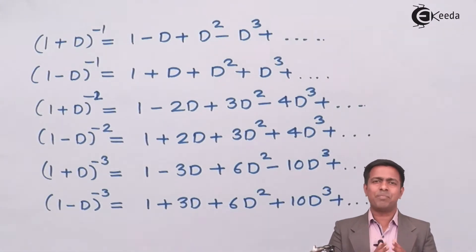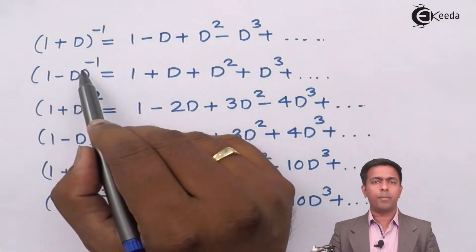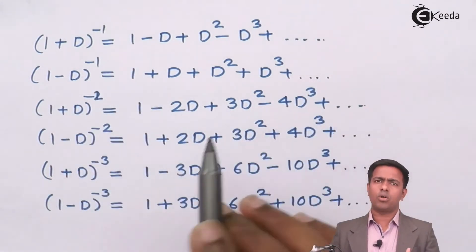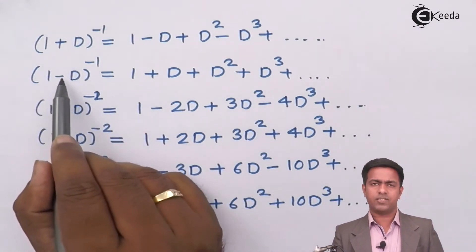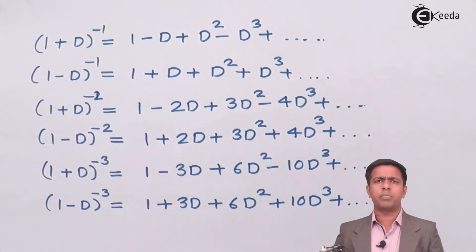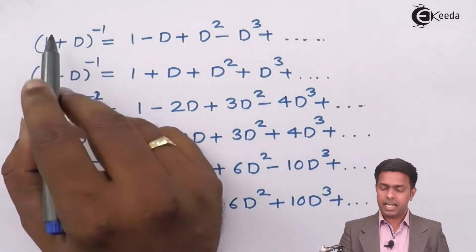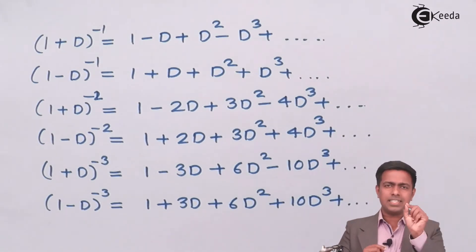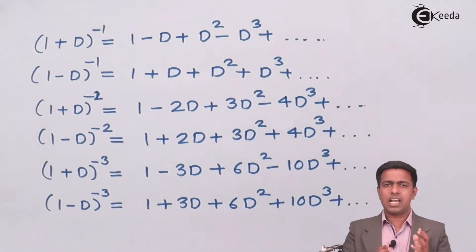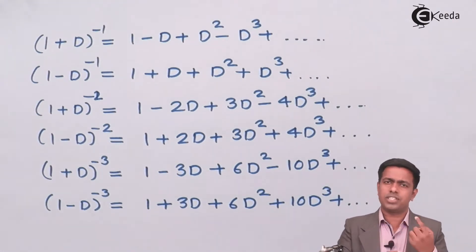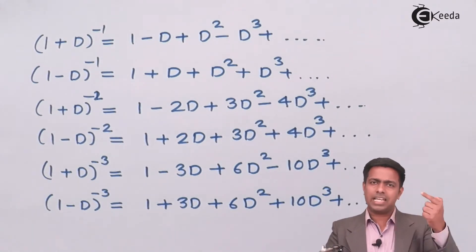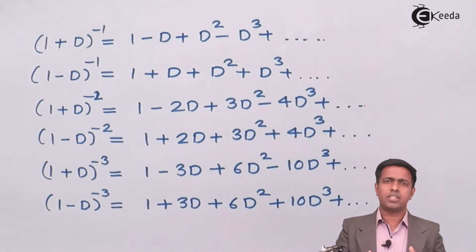Here is a hint to remember the formulas. The first two formulas are almost the same except the sign. Whenever we have a negative middle sign, all terms in the expansion are positive. Whenever we have a positive middle sign, the terms alternate plus and minus. Also observe that the power of D increases by one each time: D raised to 0, then D raised to 1, D raised to 2, D raised to 3, and so on.